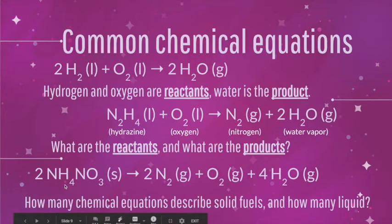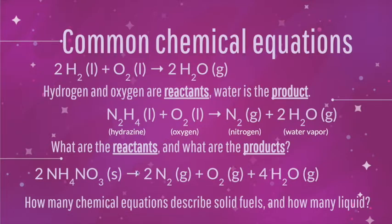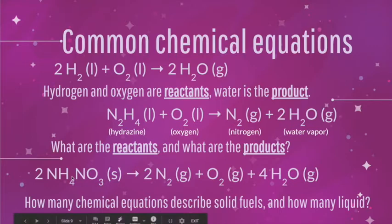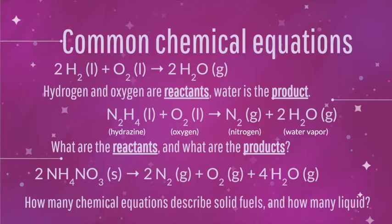The last example is a solid rocket using ammonium nitrate, another very explosive compound. It undergoes a decomposition reaction where it turns into gases, releasing seven moles of gases for every two moles of ammonium nitrate. If you're familiar with the giant explosion that happened in Beirut, Lebanon, that was an ammonium nitrate explosion that leveled a large chunk of the city. So these are the very explosive chemicals we're dealing with in chemical rockets.